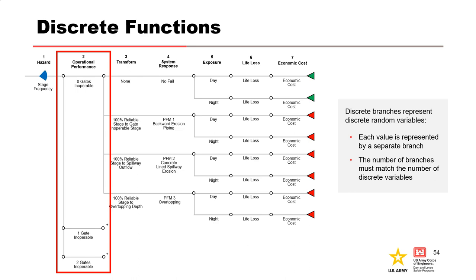Level 2 is a discrete function, used to represent discrete random variables that can take on a finite number of values, each with a separate branch and an assigned probability of occurrence. In this example, the discrete random variable is Tainter gate inoperability for a spillway with two Tainter gates, requiring three discrete function branches: zero gates inoperable, one gate inoperable, or two gates inoperable. As with the continuous function, the probabilities of discrete function branches from a single node must sum to 1, making them mutually exclusive and collectively exhaustive.